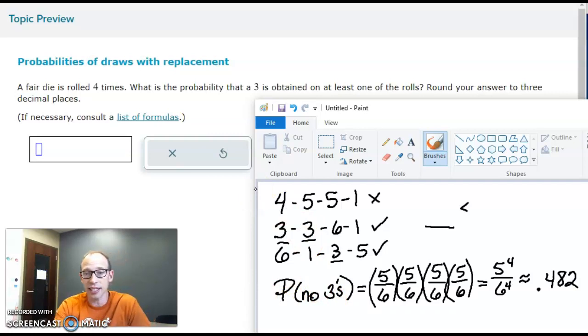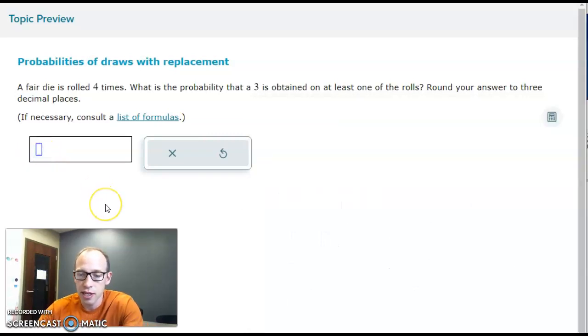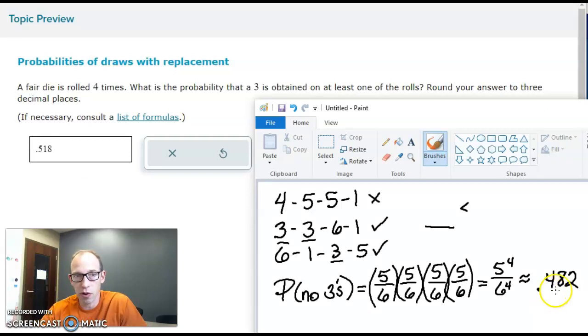It's one minus that. We found the complement, so the answer we're looking for is 0.518. It's one minus 0.482.